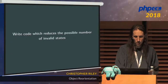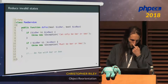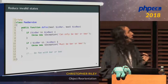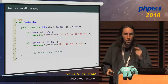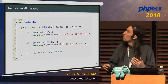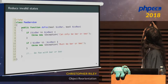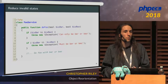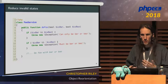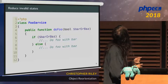The first thing we can look at is writing code that reduces the number of possible invalid states. Consider this mythical service with two boolean parameters, baz and bar. Presumably the code does something further down, but first it checks that you've got either one or the other set, but not both. The trouble is there are two valid states and two invalid states. That means 50% of the time someone calls this method without digging into it, they're going to get it wrong and it's going to throw an exception.